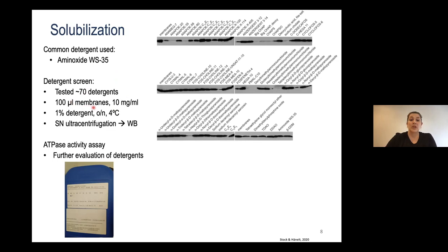What I did is I prepared membranes at 10 mg per ml, had small fractions of that, added 1% of all the detergents overnight, did a spin, and then put the supernatant on the Western blot, always comparing to the membranes that I used for all of this. As you can see, several of the detergents actually worked nicely for KDPF-ABC, which was pretty surprising for us at that time point because this Amino Oxide was said to be the holy grail in the case of KDP.